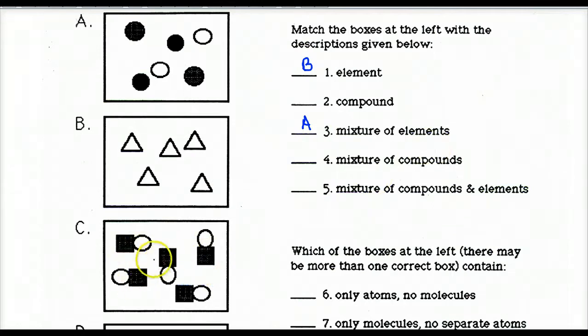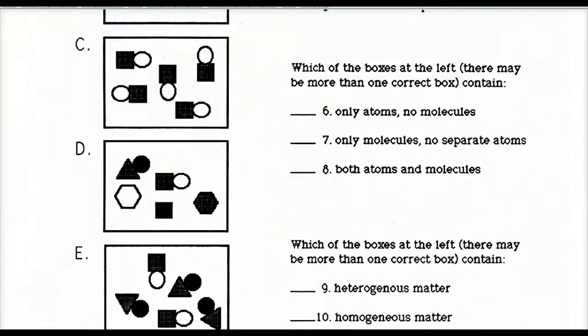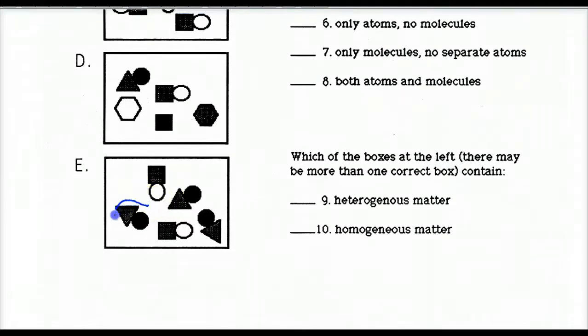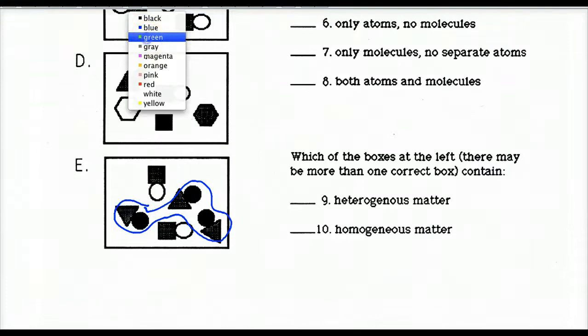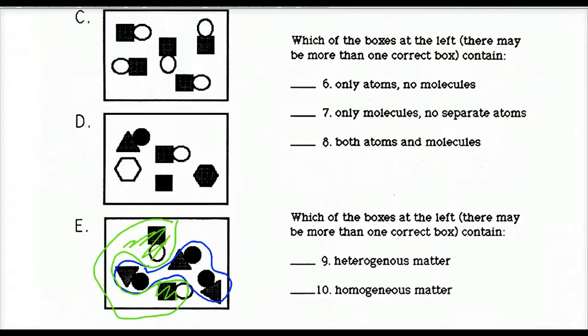Here, these particular shape things look like two different atoms bonded together. And that is a compound. And here, I have different atoms and different molecules. So it's a mixture of compounds and elements. A mixture of compounds would be E. Because E is made up of one compound, a group of the same type of molecules. So there's compound A. And here is compound B. So that's the mixture.